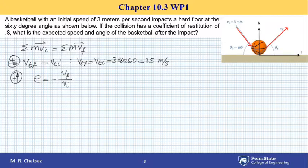So I can rewrite this equation as minus 0.8 times, if I cross multiply, initial velocity in normal direction is 3, and it is minus 3 times sine of 60, and that has to be equal to final velocity in normal direction.